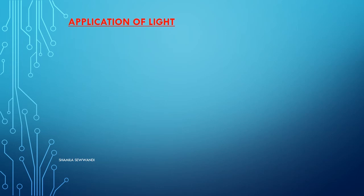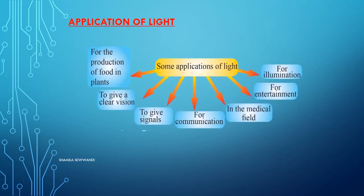Applications of light: for the production of food in green plants, we call this photosynthesis. In the photosynthesis process, light is an essential factor. Second, to give a clear vision. Next, to give a signal.